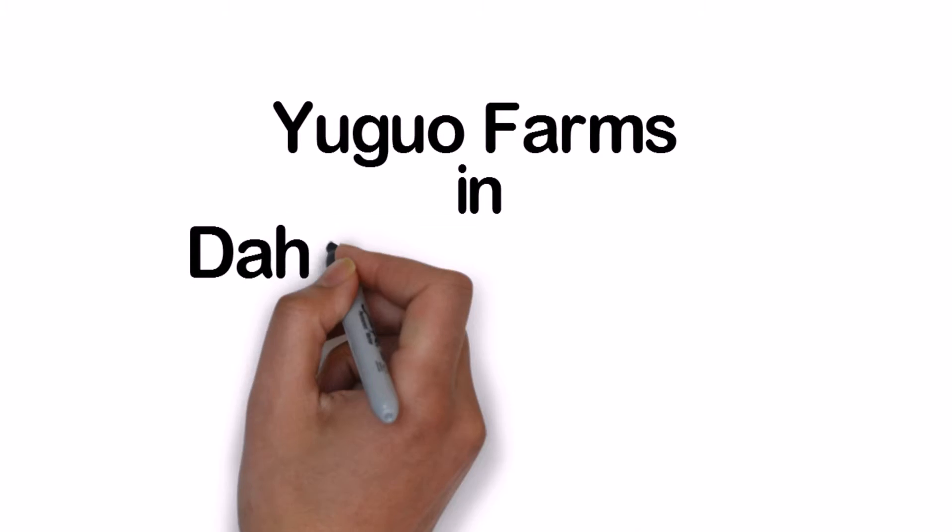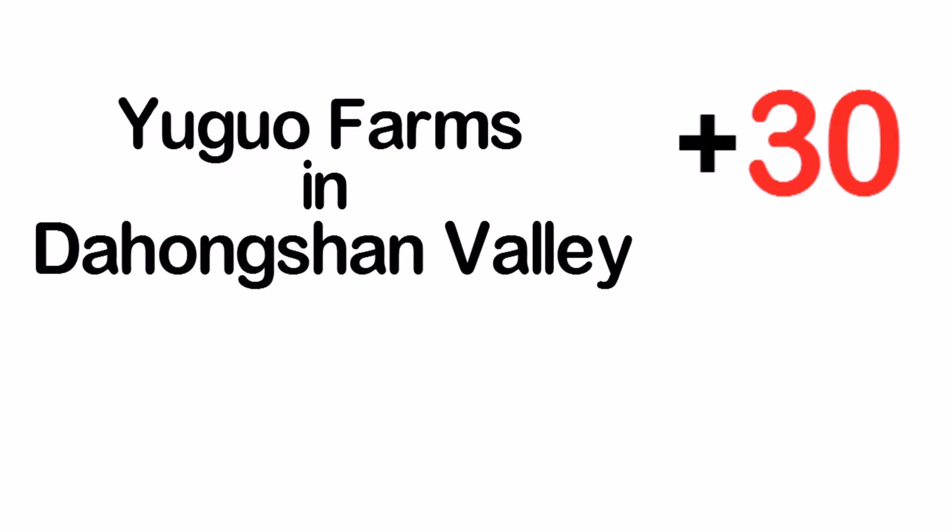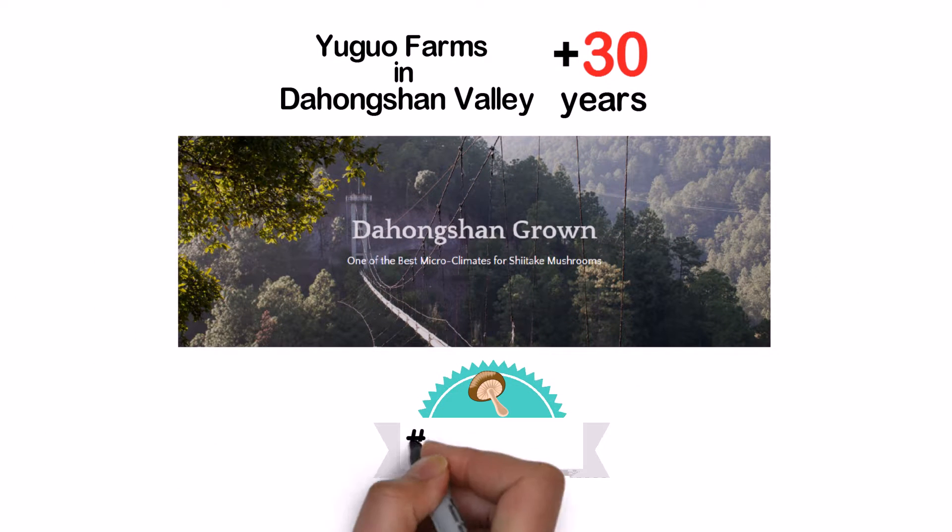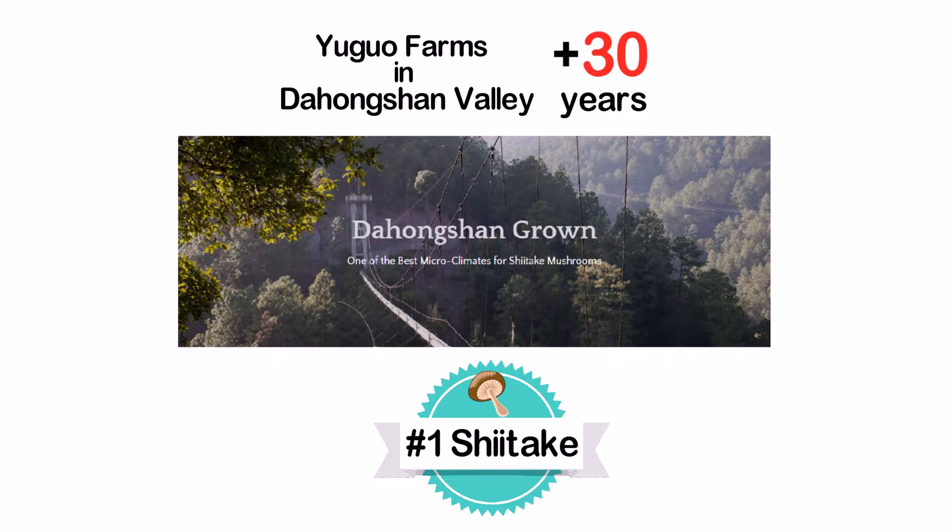Yuguo Farms is located in the Dahongshan Valley of China for over 30 years. Having the perfect microclimate for growing shiitake mushrooms, Yuguo Farms produces amongst the best tasting shiitake mushrooms in the world.